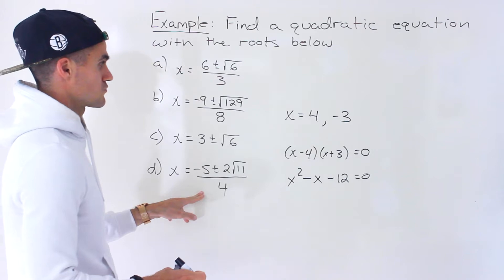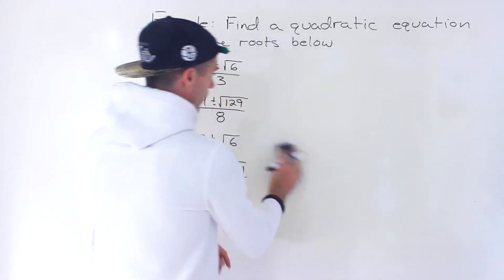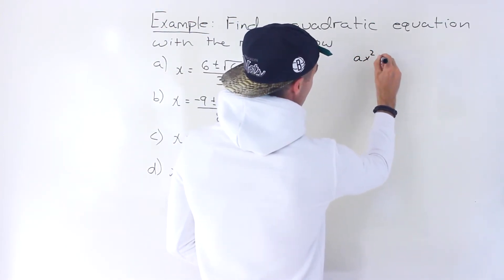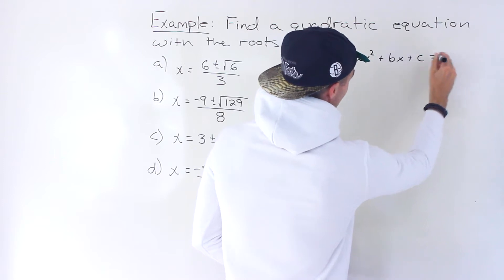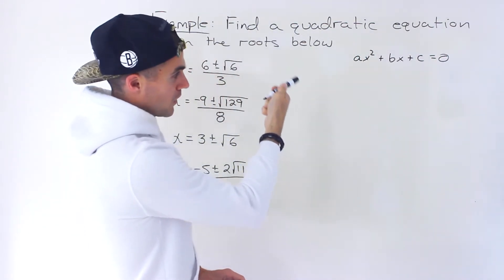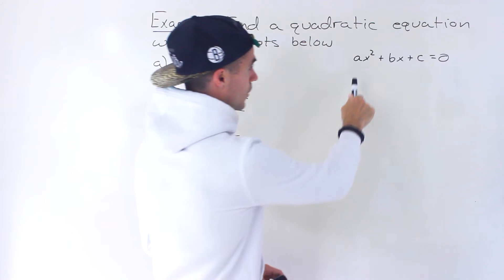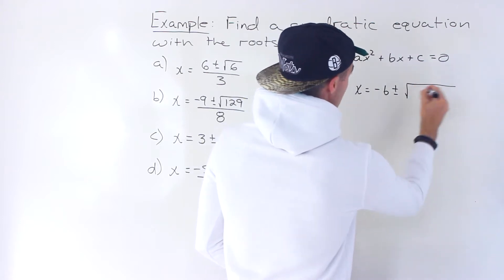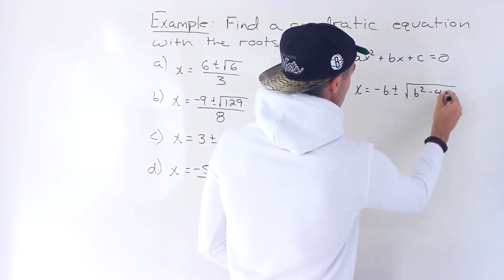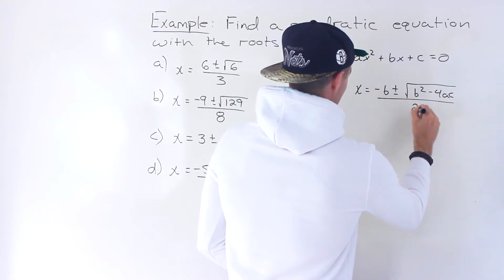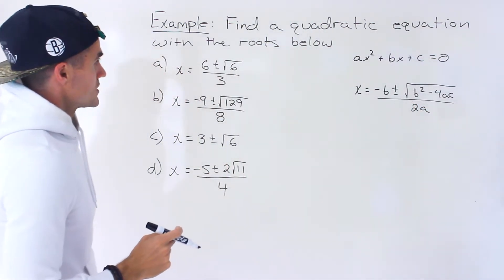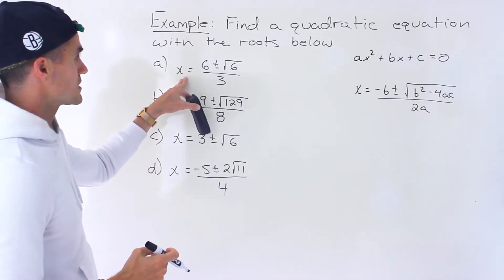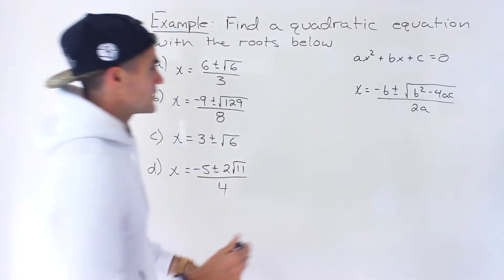Here we're working with radical terms. Remember, where are these radical terms coming from? They're coming from the quadratic formula. If we have a quadratic equation in standard form, we know x equals negative b plus or minus the square root of b² − 4ac, all over 2a. What we can do is take these solutions and sort of match them up.